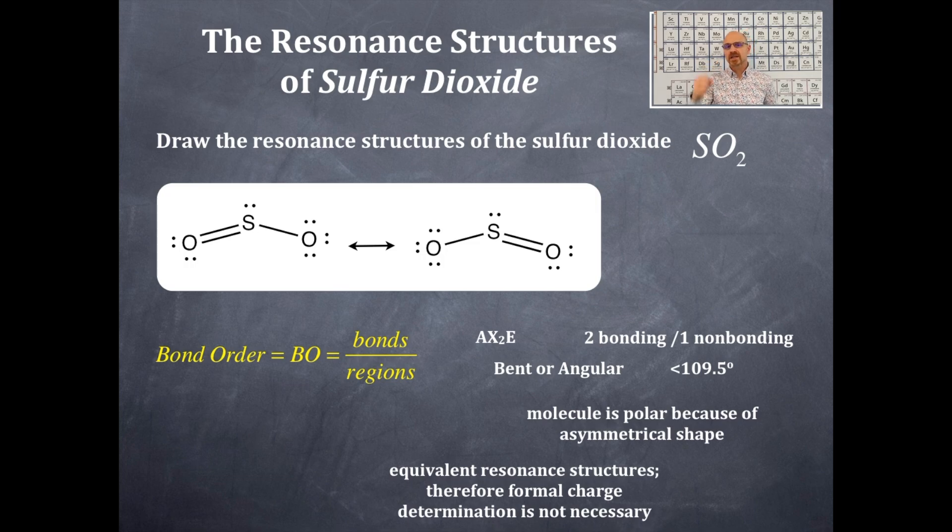Around one of the sulfurs is one single bond, a sigma bond for the double bond, and a pi bond for the double bond. So that's a total of three bonds. That lone pair of electrons on the central atom of the sulfur does not count for a bond order determination.